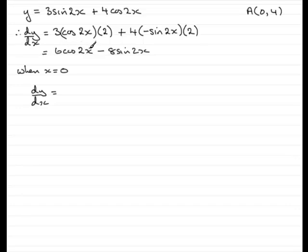Well, 6 times the cosine of 0 is going to be just simply 6, because the cosine of 0 is 1. Sine of 0 is 0, so that's going to go out. So the gradient of the tangent at the point A is 6.